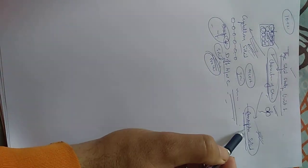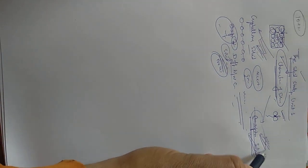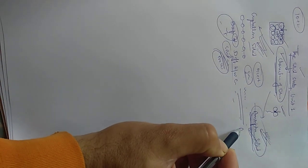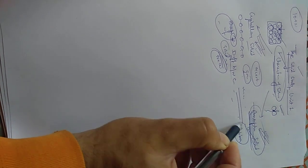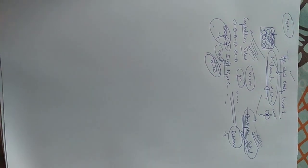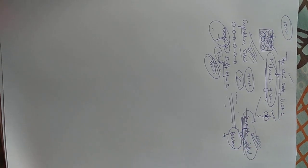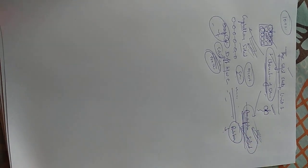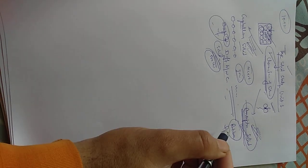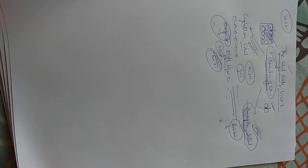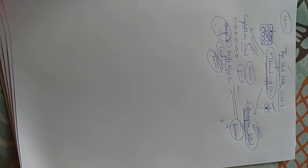In case of amorphous solids, for example rubber — when we melt rubber, it does not sharply convert; it drops gradually. So amorphous solids do not have a sharp melting point.